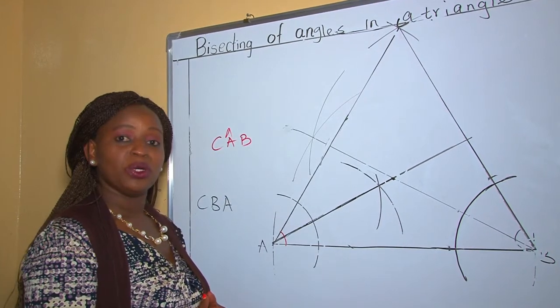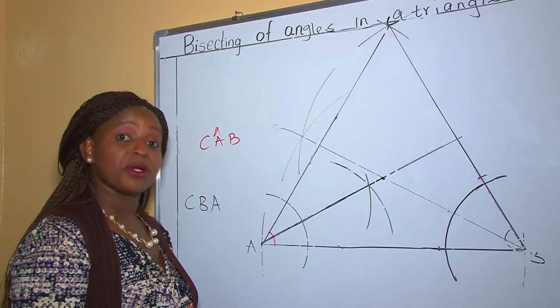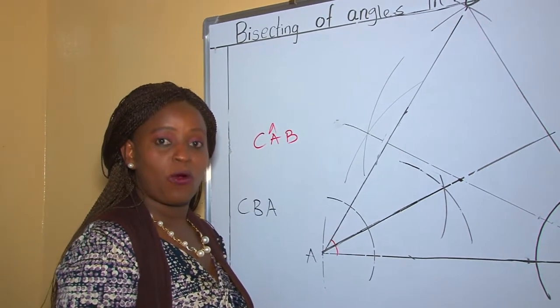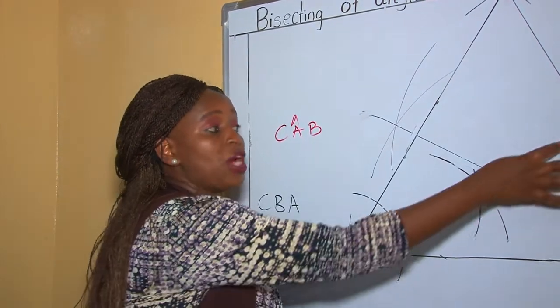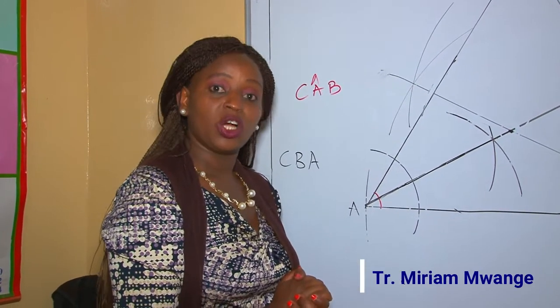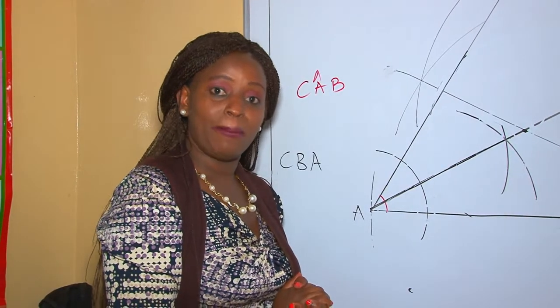Therefore, now we are able to bisect our two angles. This concept is very important because it helps learners to draw a circle touching the sides of the triangle. At the point of intersection here, that's where you put your compass and you are able to draw a circle touching the sides. I'll stop there until we meet again. Continue kindly subscribing and watching as you continue learning together. Bye bye.